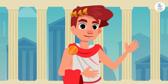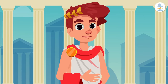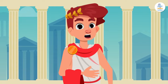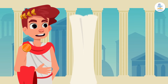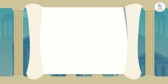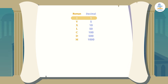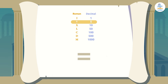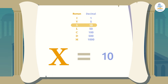The numbering system is made up of seven capital letters, and each letter has a numerical value. Let's see the value the Romans gave to each letter. The letter I has a value of 1, the letter V has a value of 5, and the letter X has a value of 10.